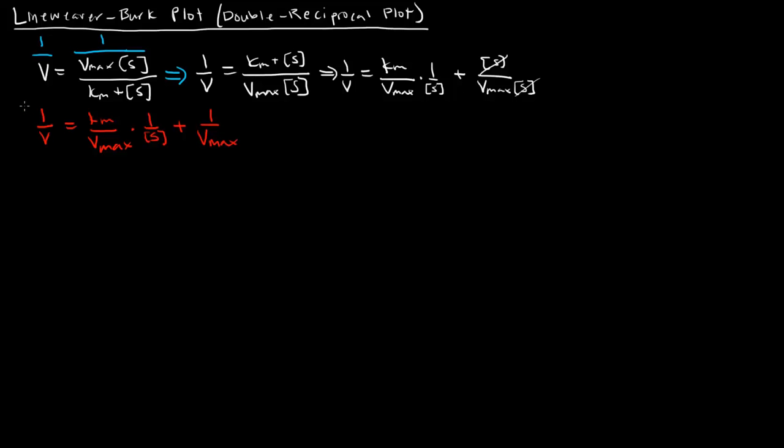So now this thing here is an important equation. It's specifically called the Lineweaver-Burk equation. And some of you probably already see why this thing is awesome relative to the hyperbolic equation. The reason why is because it's a line. This is Y equals MX plus B.